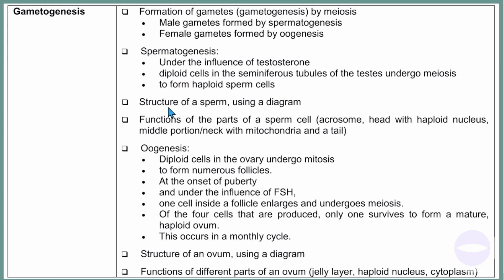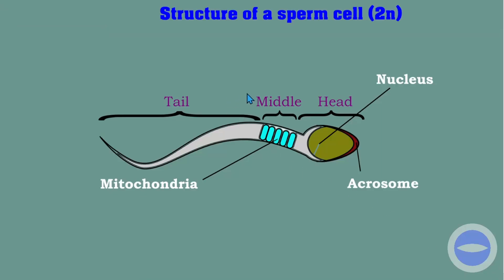We must know the structure of the sperm using a diagram. Sperm contains a tail, a middle part, and a head. In the head, we have the acrosome, the nucleus, and mitochondria. We must know the functions of the nucleus, acrosome, mitochondria, and the tail — giving the function of each part.